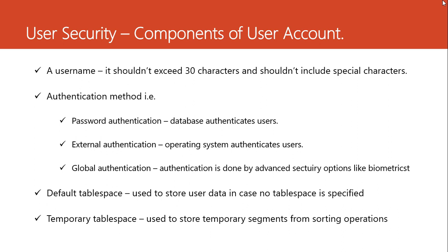Apart from the username, we also have the authentication method. Every user account must have a way of being authenticated into the database. We have three ways: password authentication, external authentication, and global authentication. With password authentication, we use passwords — the username and password are stored in the database, and whenever the user tries to connect, the database authenticates the details provided.